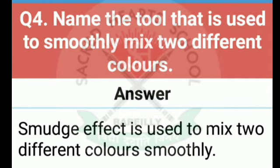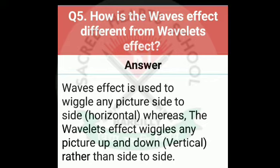The waves effect is used to wiggle any picture side by side, that is horizontally. Waves effect se humaari koi bhi picture hoti hai woh side by side mein wiggle ho jaati hai — horizontal waves. Whereas the wavelets effect wiggles any picture up and down, that is vertically rather than side by side. Wavelets effect se humaari picture up and down wiggle hoti hai, means usmein vertical waves banti hain. So in dono mein yeh difference hai: waves effect se horizontal waves banti hain, but wavelets effect se vertical waves banti hain.